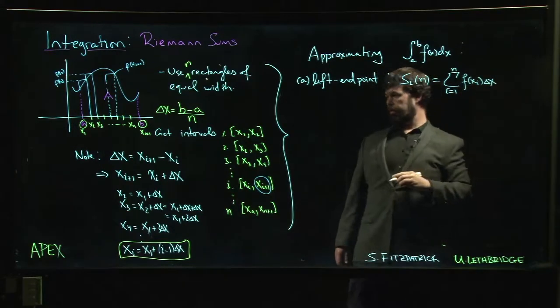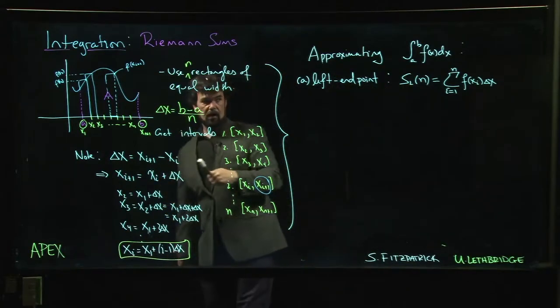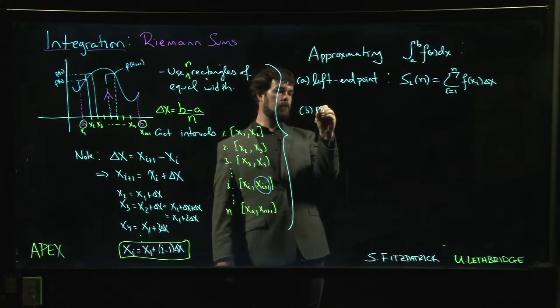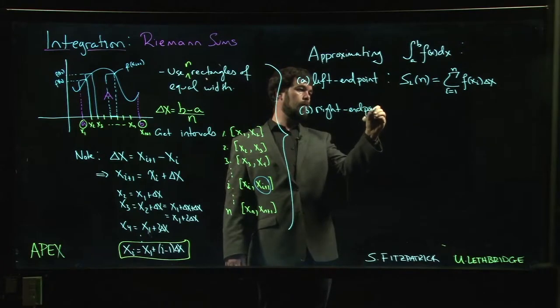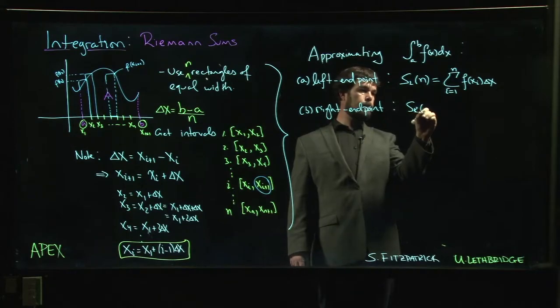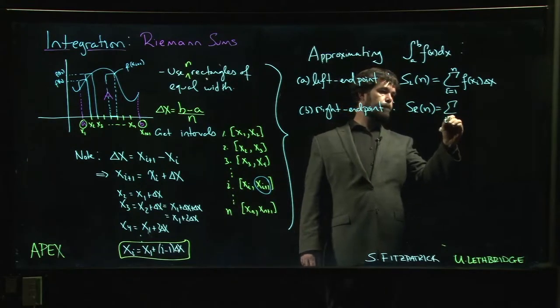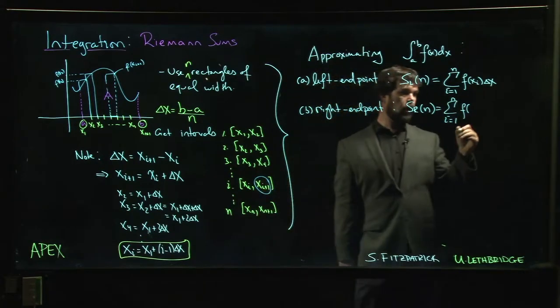All right, where delta x is b minus a over n as we had here. There's the right endpoint sum, so there you use the other end of the interval, so you use i plus 1.